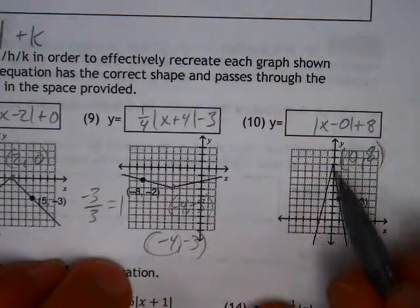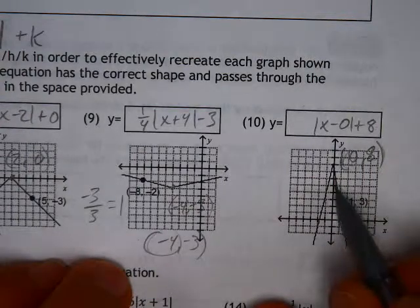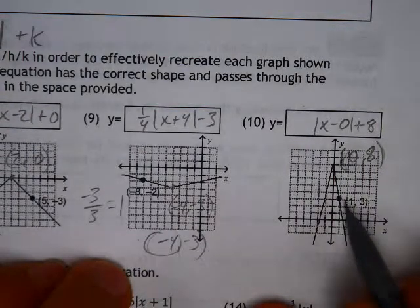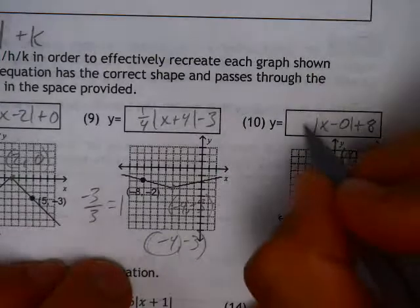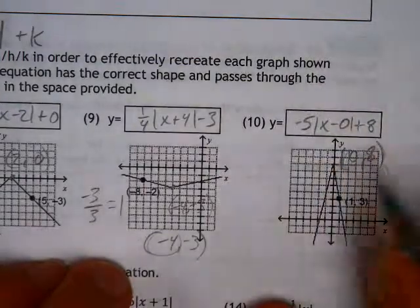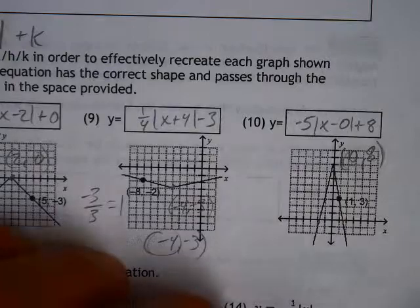Plus 8. The slope is down 1, 2, 3, 4, 5, and over 1. So it's a negative 5. But it's negative because the v is upside down.